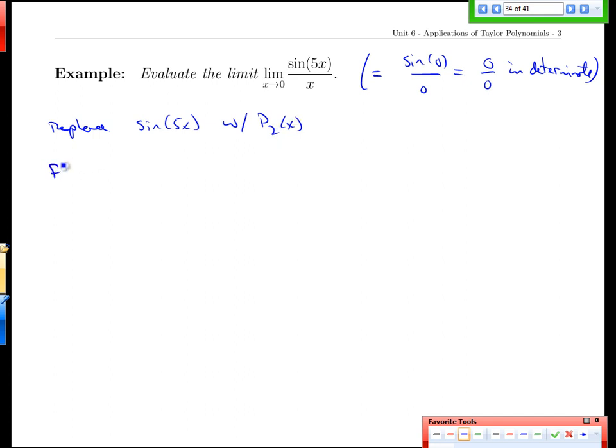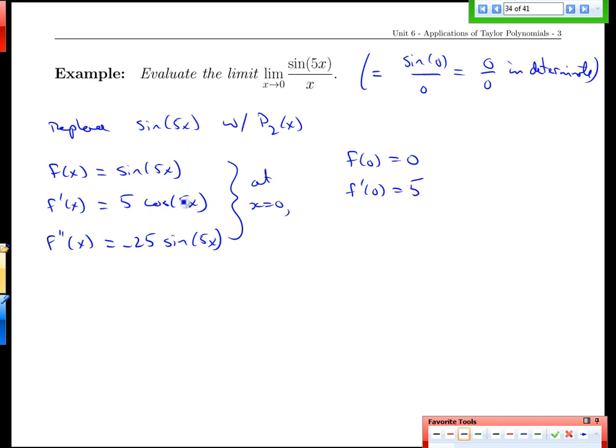Our function then, the part we're interested in is to replace just the sine of 5x. We don't want to replace the x, it's going to cancel later. So we take the sine of 5x as our function, we get derivatives, we get second derivatives, and that gives us all the tools we need. We're going to use the value x equals 0. So we get f of 0 is 0, f prime of 0 is 5, cos of 0 is 1, f double prime of 0 is 0.